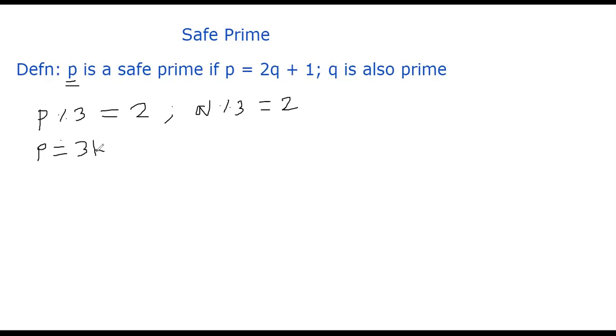If p mod 3 is 1, I can write p to be 3 times k plus 1, right? That's the meaning of p divided by 3 gives you a reminder 1. That's just definition of mod. Now I know that p is equal to 2q plus 1. So let's go and put it there.